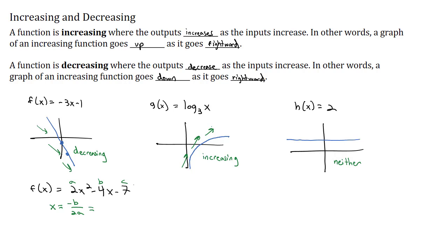and the negative 7 as the c. So the opposite of b, the opposite of negative 4 is 4, over 2 times 2, 4 over 4 equals 1. So when x is equal to 1, we're going to switch directions. In other words, this graph is a parabola where that direction switch happens when x is equal to 1.